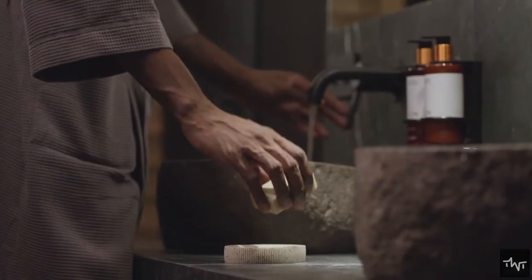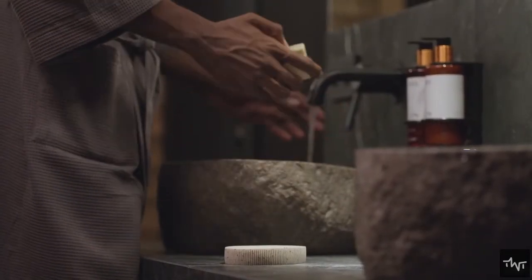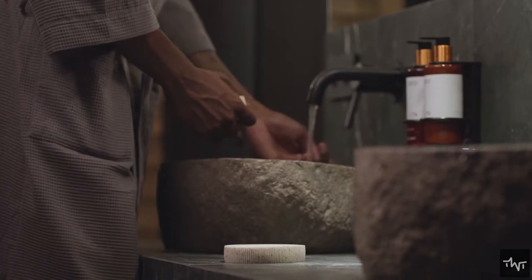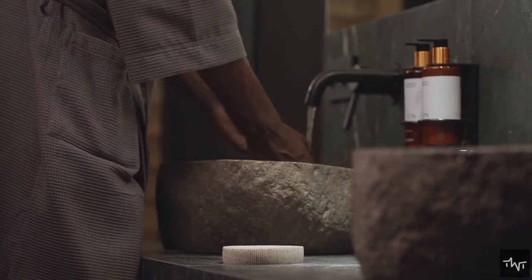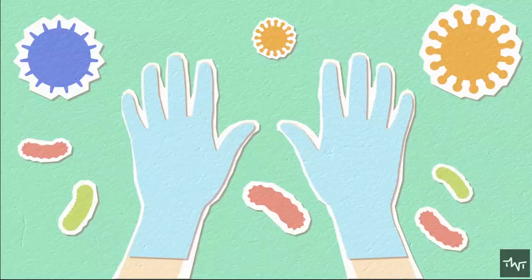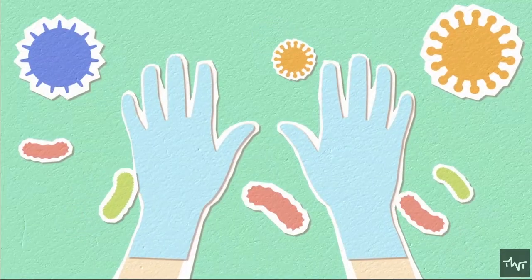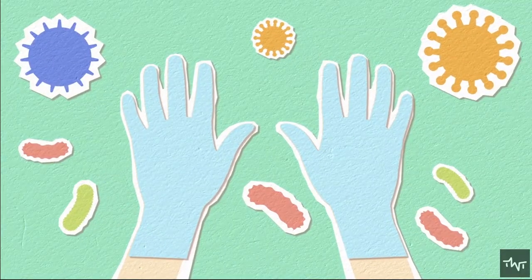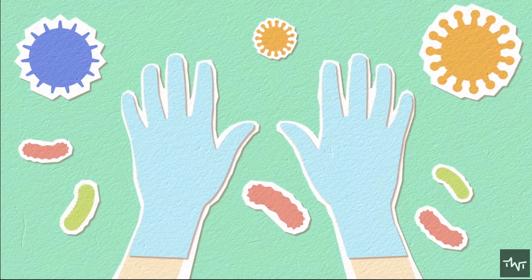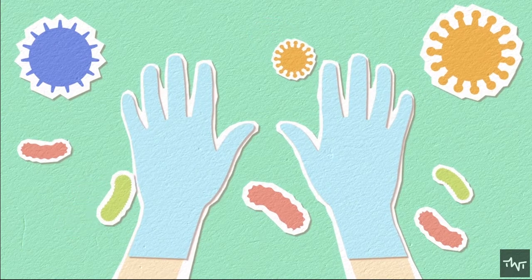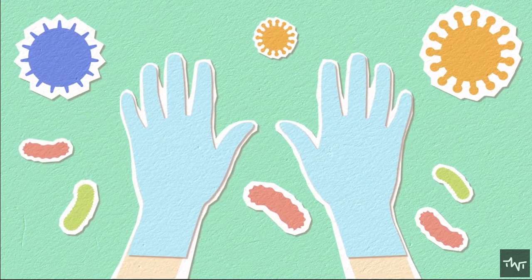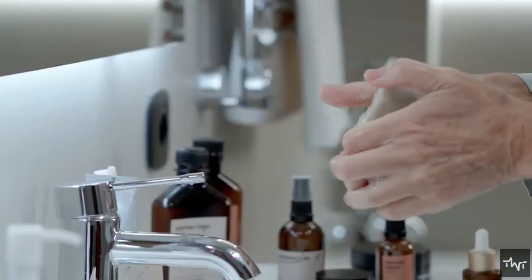Still, washing with soap and water has been repeatedly shown to prevent the spread of illness, and may be helpful even when it increases your bacteria counts. That may be because two kinds of microbes live on the hands: residents and transients. The transient variety are the ones that tend to cause colds or other infections —